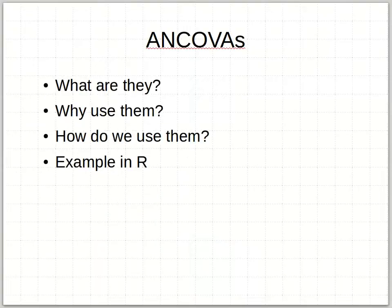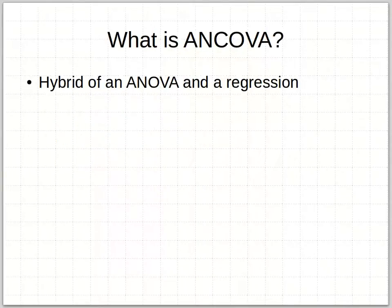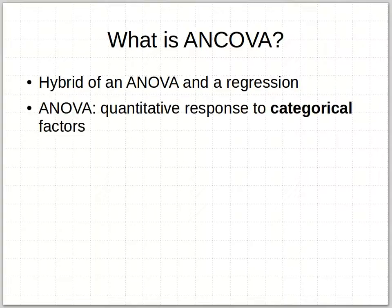So what are they and why do we use them? We'll get to how we use them in general, and I'll show you an example in R as well. An ANCOVA is a real simple concept — it's just simply a hybrid of an analysis of variance and a regression.